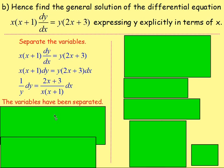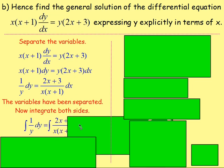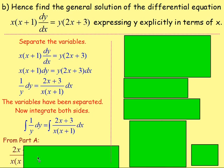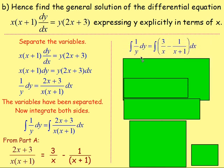You would integrate both sides. We're integrating 1 over y dy, and we're integrating (2x plus 3) over x(x plus 1). We have to use our previous answer and rewrite the right-hand side in its partial fractions form — 3 over x take away 1 over (x plus 1). Integrating: 1 over y goes to ln y; 3 over x goes to 3 ln x; and 1 over (x plus 1) goes to ln(x plus 1). Plus c.